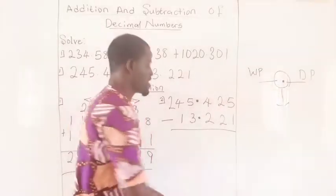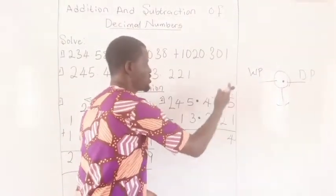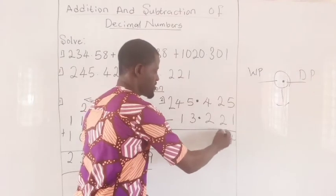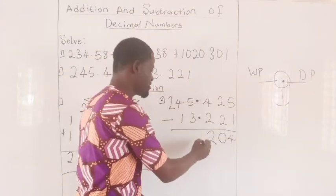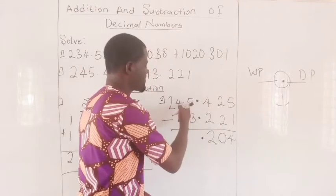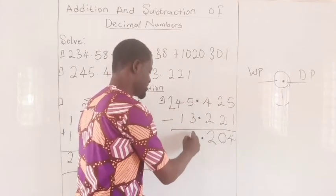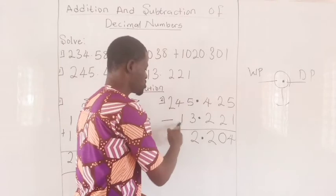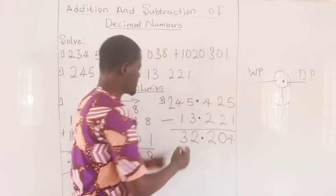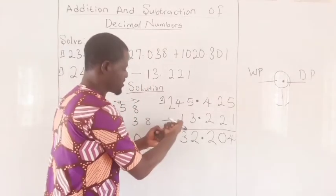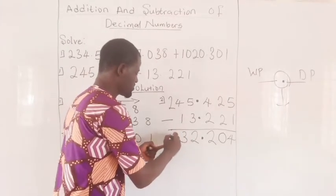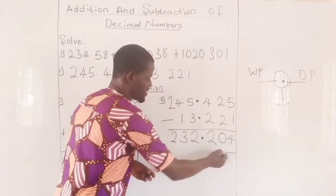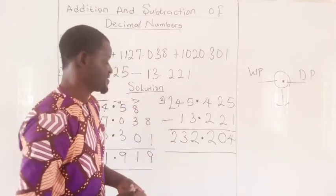Five minus one is four. Two minus two is zero. Four minus two is two. The next thing is your decimal point. Then, five minus three is two. Four minus one is three. Then, these two, you bring it down. Because there is no any number here for you to subtract anything from. So, you bring it down. And here is our final answer.